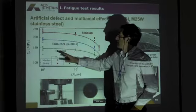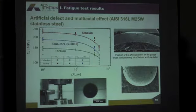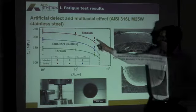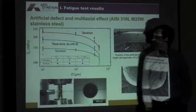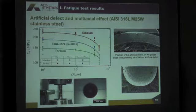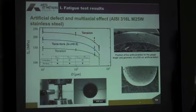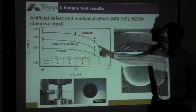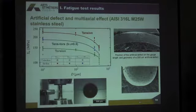Here I'll go fast. We have the results we obtained — the fatigue limit as a function of the defect size in tension, torsion, and combined tension and torsion. And what we can see here is that the defect seems to be less detrimental in torsion than in tension. This is something which is well known in the literature.